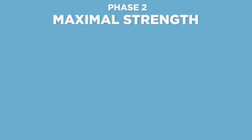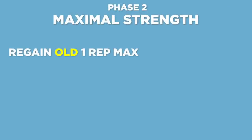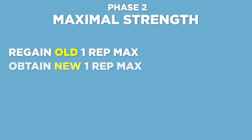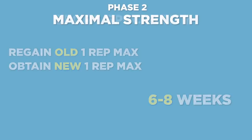The athlete's job is to regain old 1RMs from a previous off-season or to obtain new and improved 1RMs. This phase may last anywhere between 6 and 8 weeks, depending on how long the athlete has. The athlete will also continue to work to hold the muscle built in phase 1.